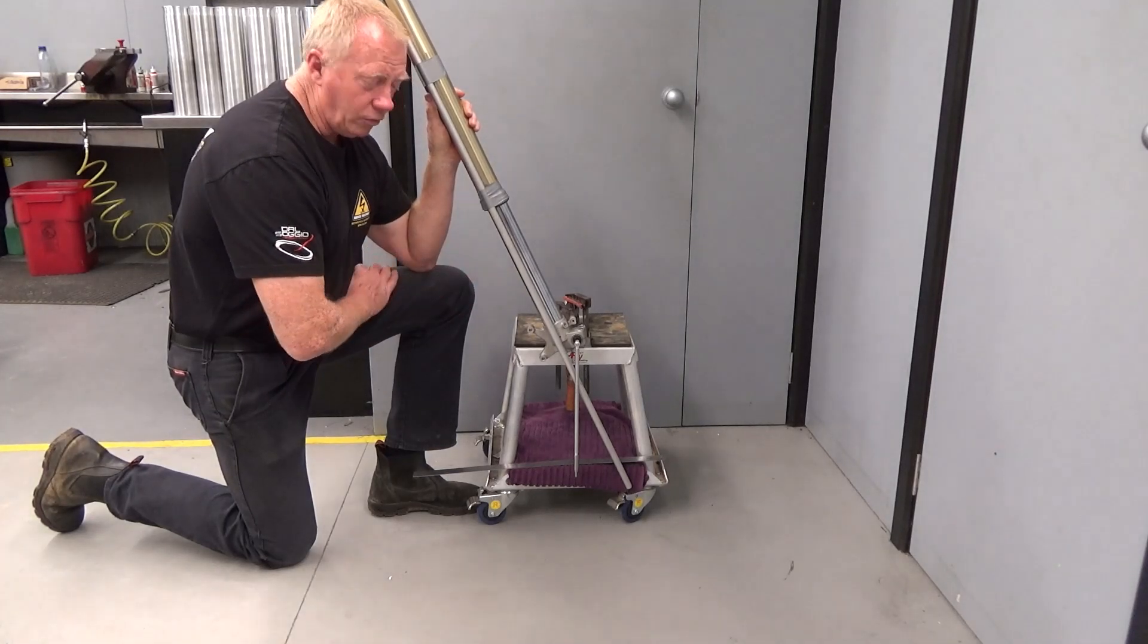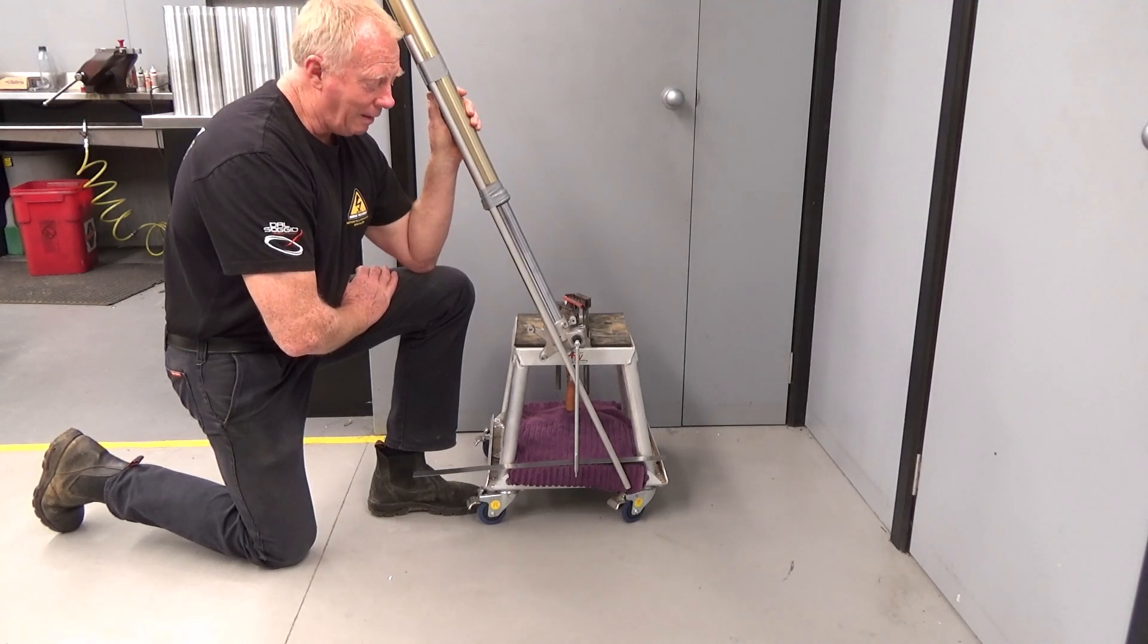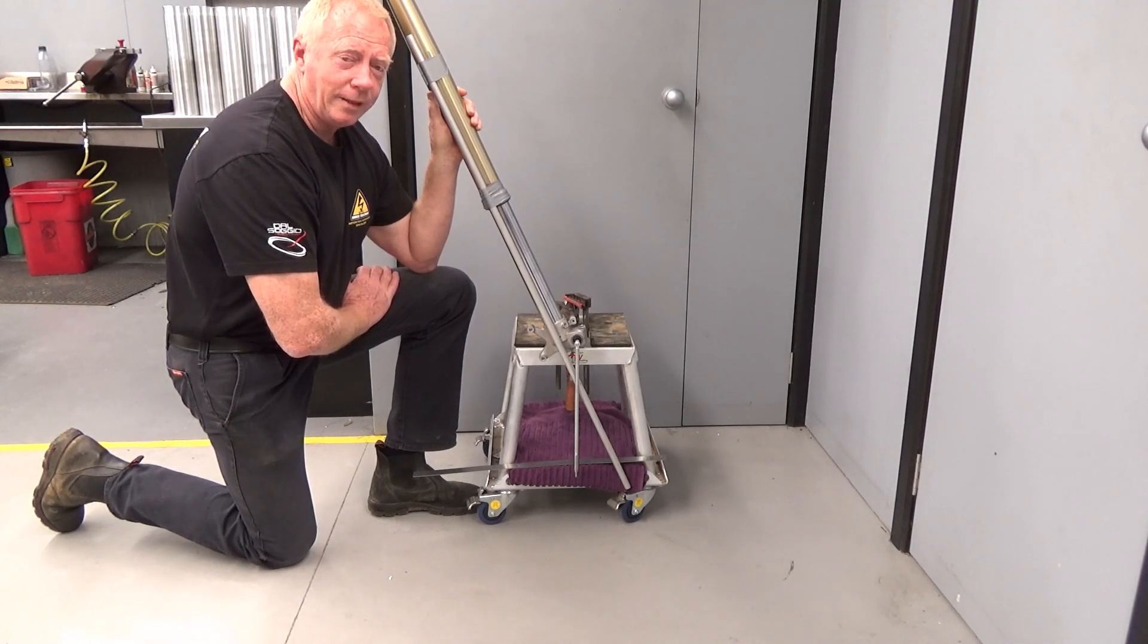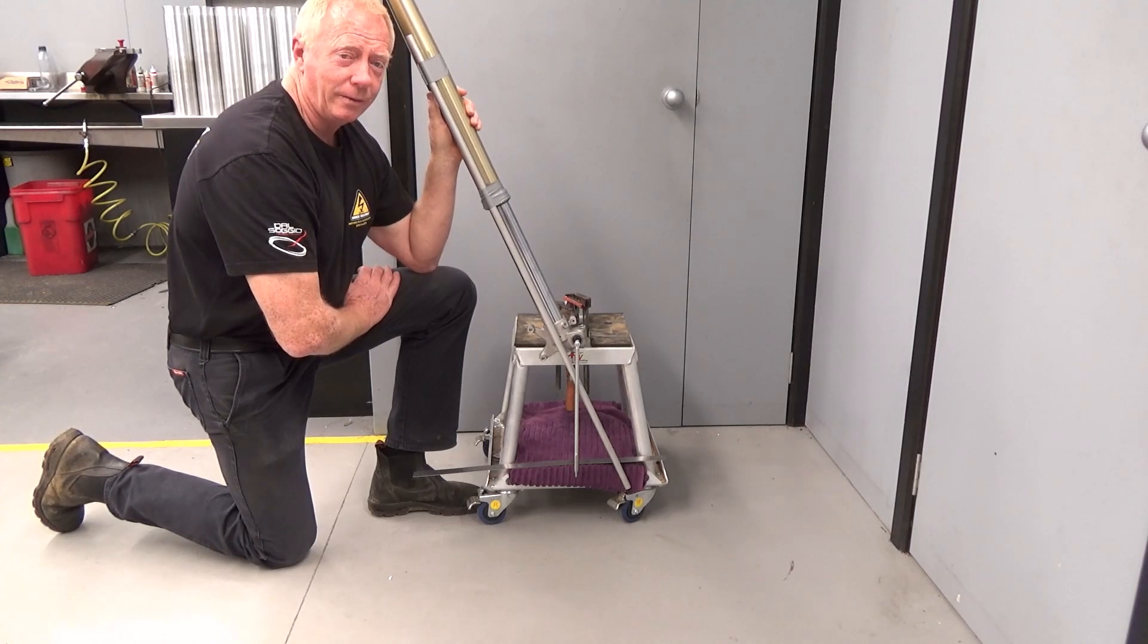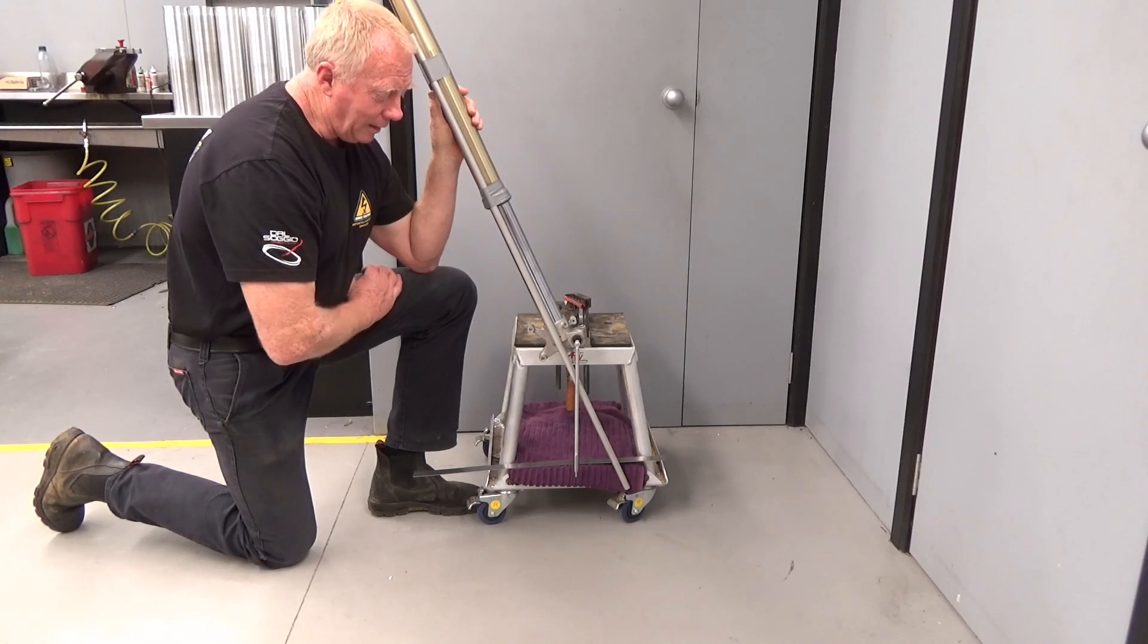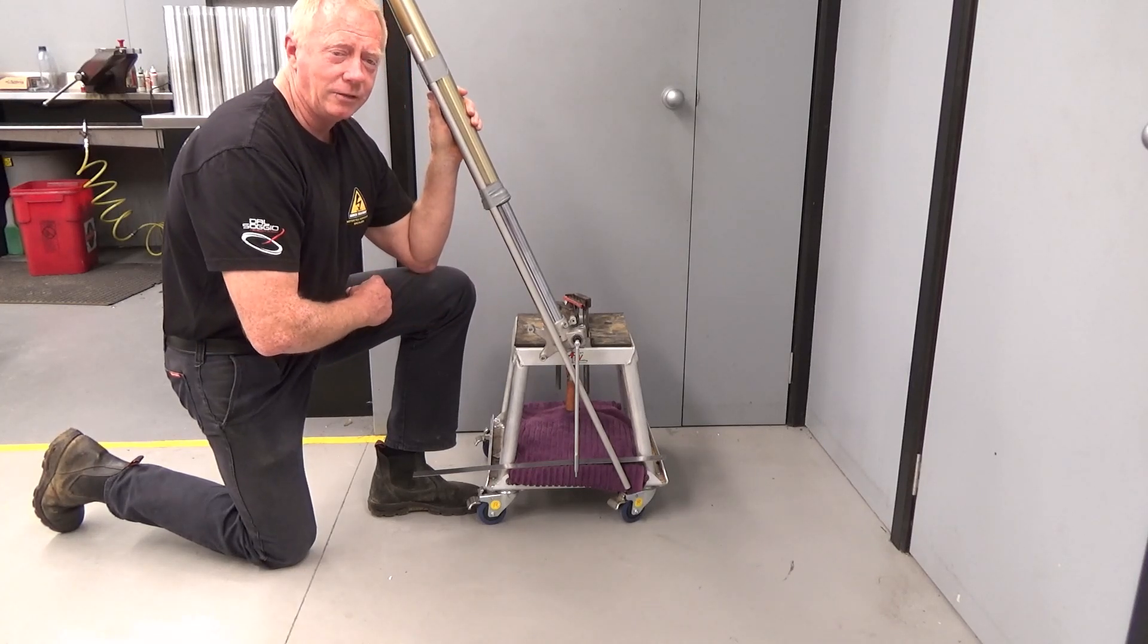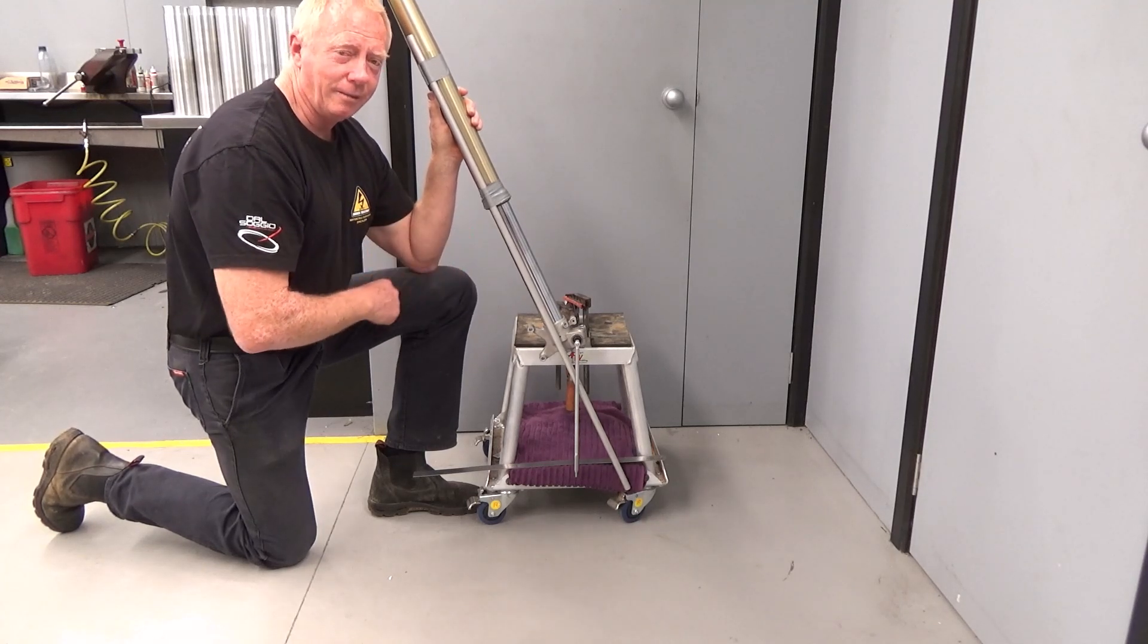So a normal bike might have something like a 22-millimeter offset in the triple clamps. For a motard guy, you might be dropping that by 10, 12 millimeters. You might be down to around a 10 or an 8-millimeter offset. And so you can see the difference that that will make. And obviously, that will have a major effect on our grip, our stability, and our feeling at the bars.